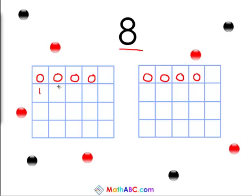In both of these boxes, we have 1, 2, 3, 4. 4 beads. So, 4 plus 4 equals 8.